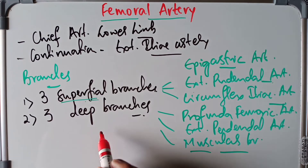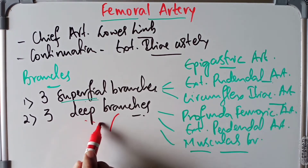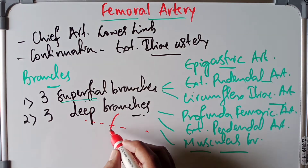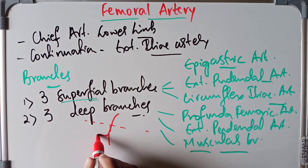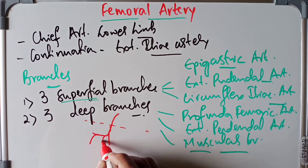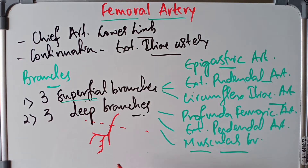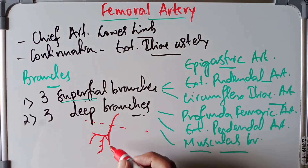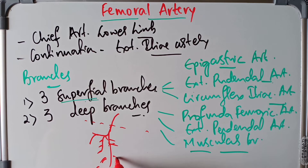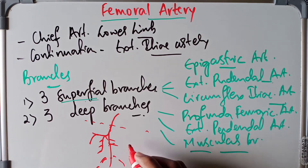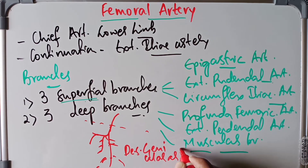Looking at this overview: the femoral artery is a continuation of the external iliac artery. At the inguinal ligament it continues as the femoral artery, and as it goes down it gives its largest branch, the profunda femoris artery. From the profunda femoris we find the lateral circumflex femoral artery and perforating arteries to the muscles. It also gives the medial circumflex artery, then continues downward giving muscular branches to the anterior compartment of the thigh. Just before entering the popliteal region it gives off the descending genicular artery.